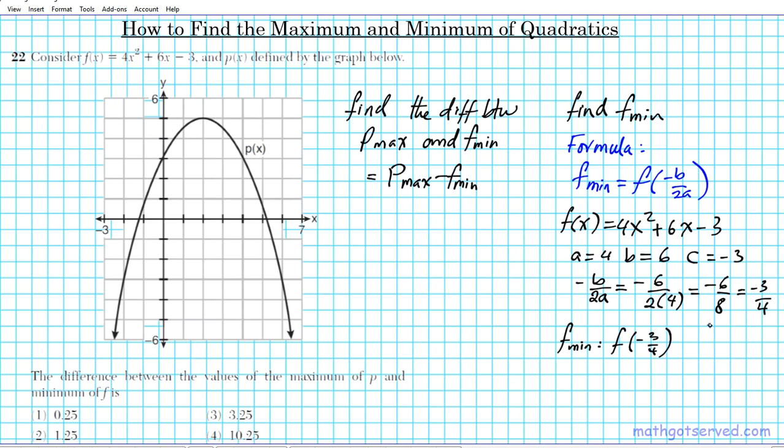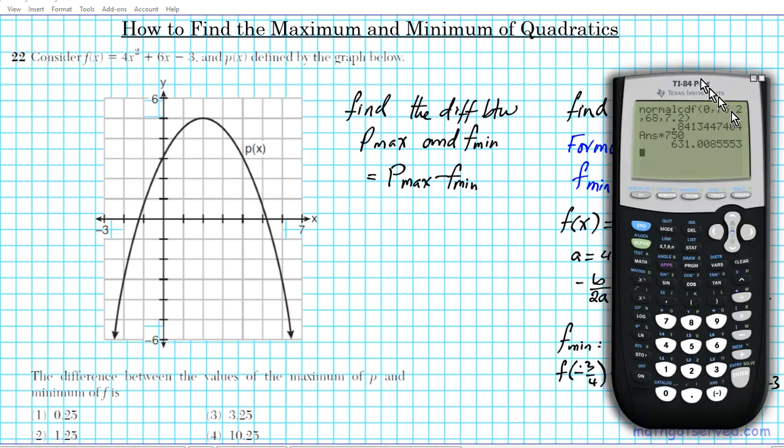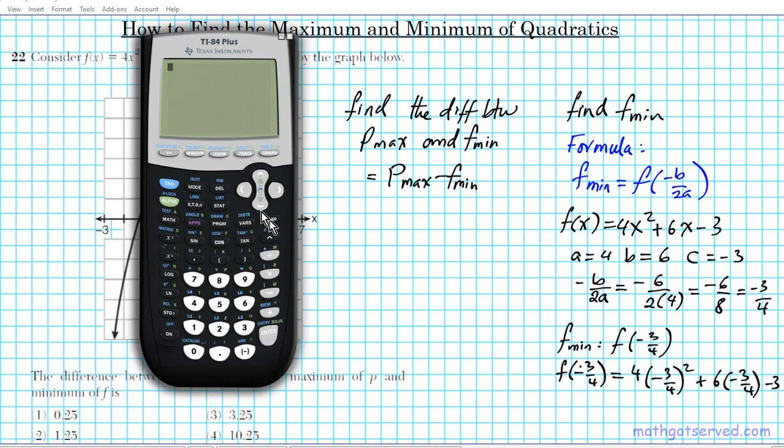Now to find what F min is, you're just going to evaluate the function at negative 3 over 4. So we're going to plug in negative 3 over 4 into this function. F of negative 3 over 4 is going to be 4 times negative 3 over 4 squared plus 6 times negative 3 over 4 minus 3. Since we have the luxury of using the calculator, let's go ahead and use the calculator to calculate this.